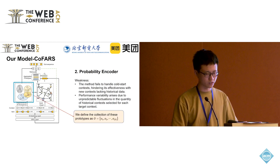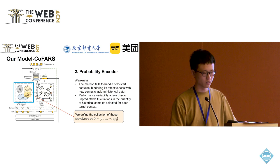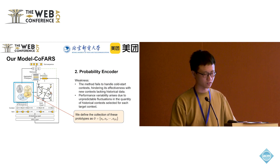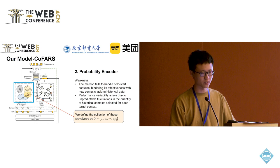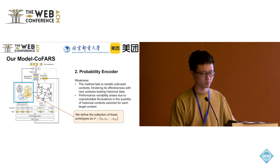We noticed that user preferences derived from prolonged user behavior tend to remain stable. Therefore, we introduced preference prototypes — centers in the user preference space that group similar contexts. In this figure, the circle represents contexts while the triangle represents prototypes. Contexts whose preferences closely match the same prototype are considered analogous. However, due to limited understanding of prototypes and lack of explicit prior knowledge, deriving their probability distribution across point attributes directly is not feasible.